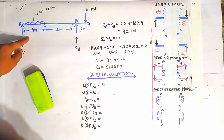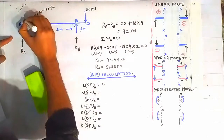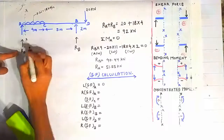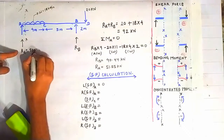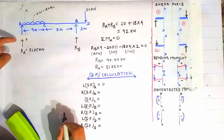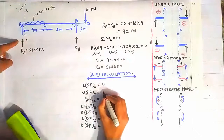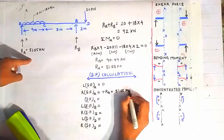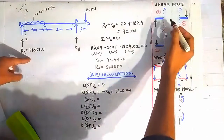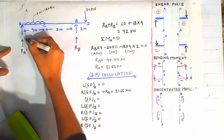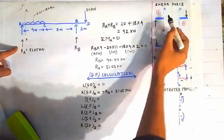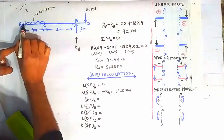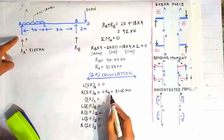For shear force on the right side of point A, construct a section XX on the right side of A. The reaction Ra is 51.55 kN acting vertically upward, so using our sign convention the shear force on the right side of A is plus 51.55 kN, taken as positive because Ra acts upward on the left portion of the section.